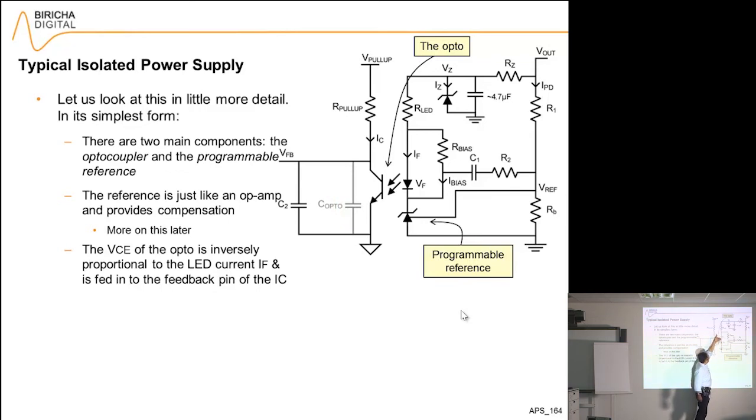As the current across this LED—all of this is inside one package—increases, you get more light shining onto this junction here, and the transistor will turn on more. When the transistor turns on more, the voltage drop across here will decrease. Therefore, VCE of the transistor is now inversely proportional to the amount of current passing through here, and I have got a measure of my output voltage.